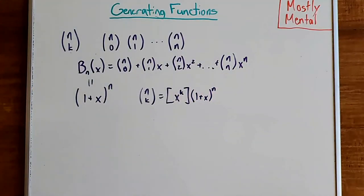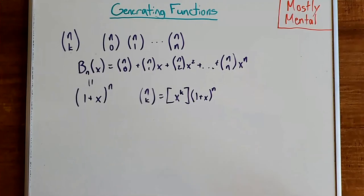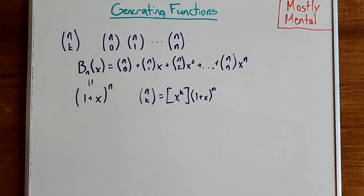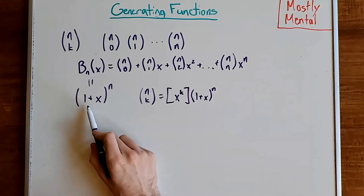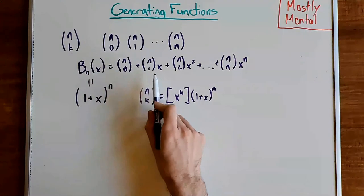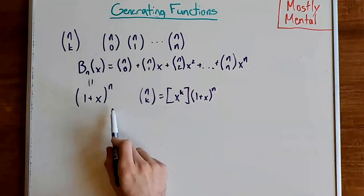This result is known as the binomial theorem, since we're raising a binomial to a power. And the n choose k are more commonly known as the binomial coefficients, since they're the coefficients in a binomial expansion. Also, if we substitute x equals 1, this gives us another proof that n choose 0 plus n choose 1 plus n choose 2 and so on equals 2 to the n.